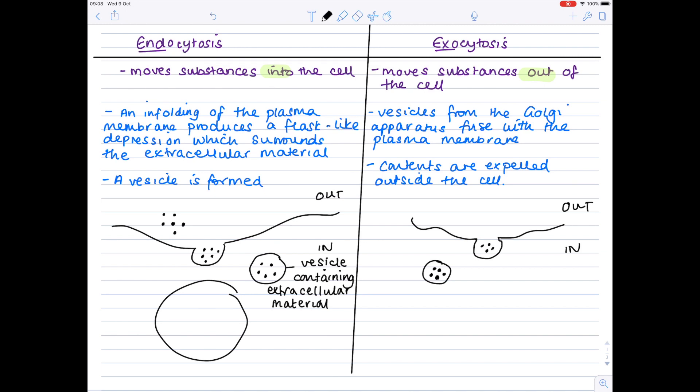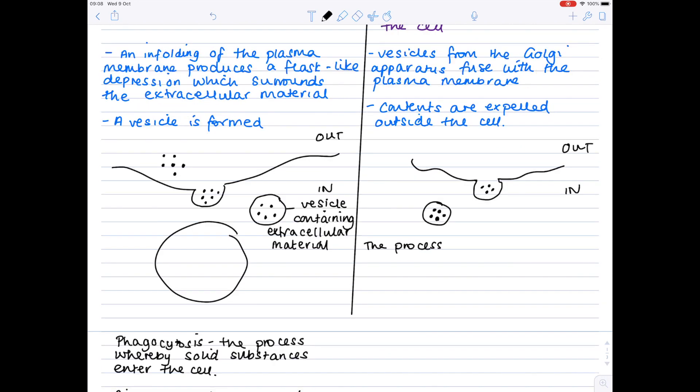This is important because, remember, in endocytosis we're effectively pinching off some of that cell surface membrane to move substances into the cell. So we don't want a net change in the size of the cell surface membrane. So these processes oppose each other and basically cancel each other out. And this process requires energy from ATP.